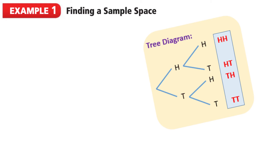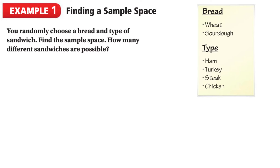In our first example, we're going to find the sample space, and we'll do this by using a tree diagram. Here's a menu with different types of sandwiches. The question says: you randomly choose a bread and type of sandwich — find the sample space. How many different sandwiches are possible?